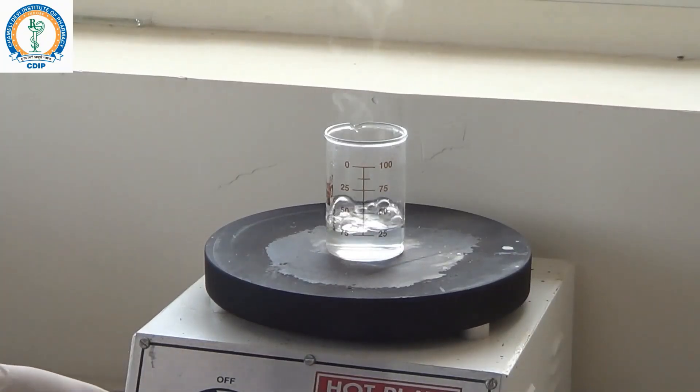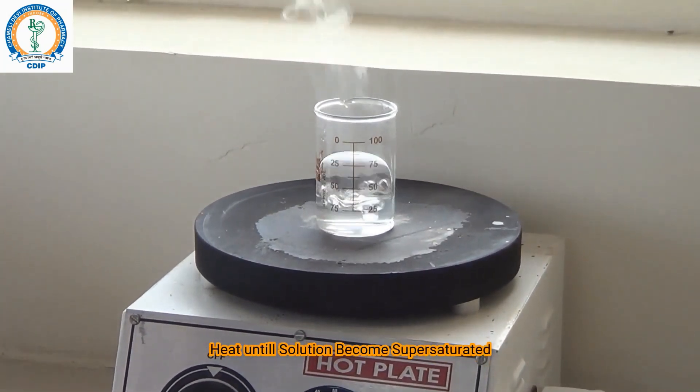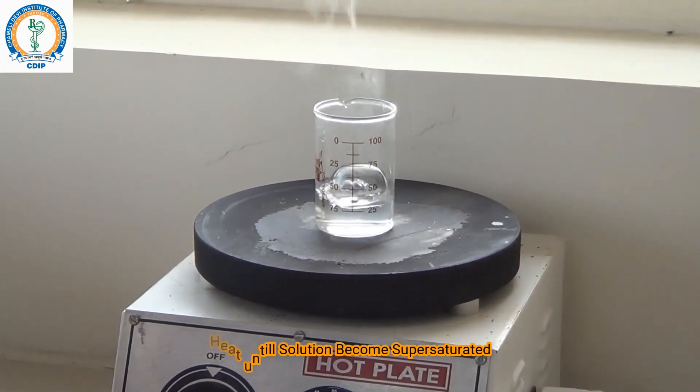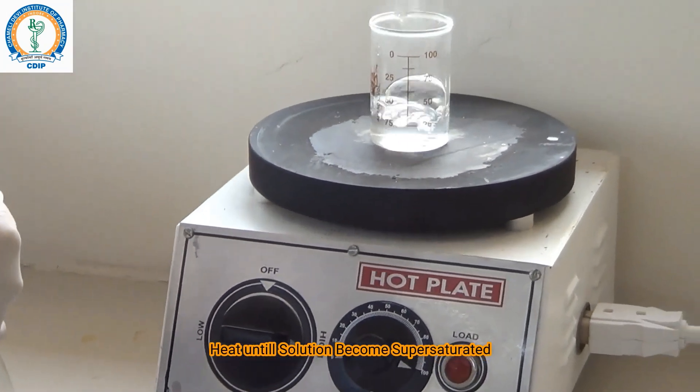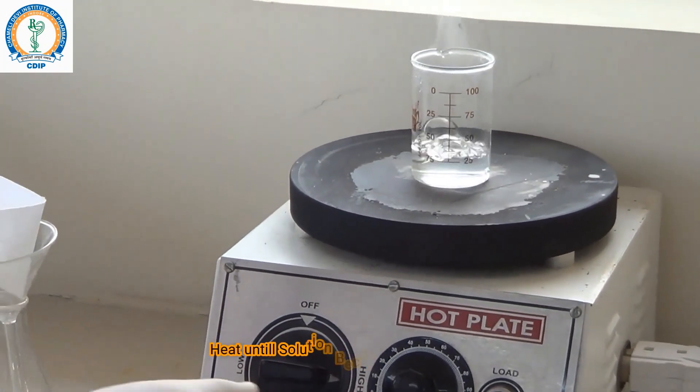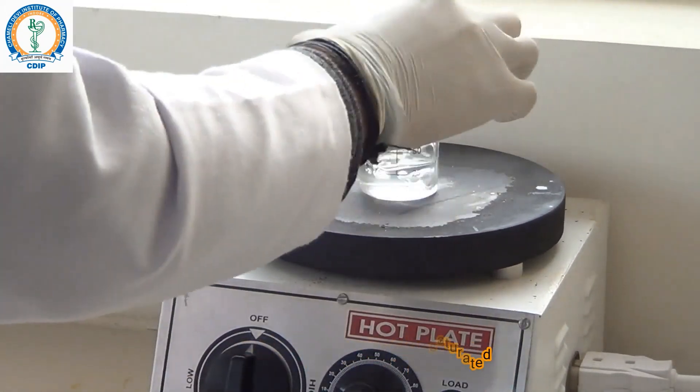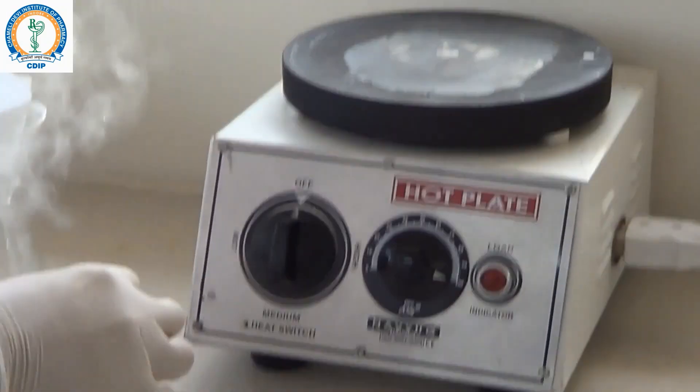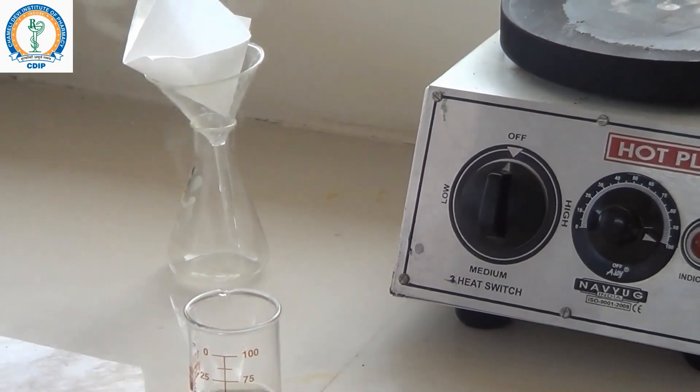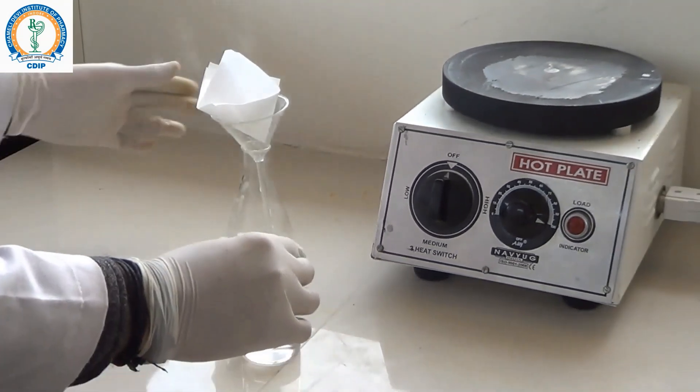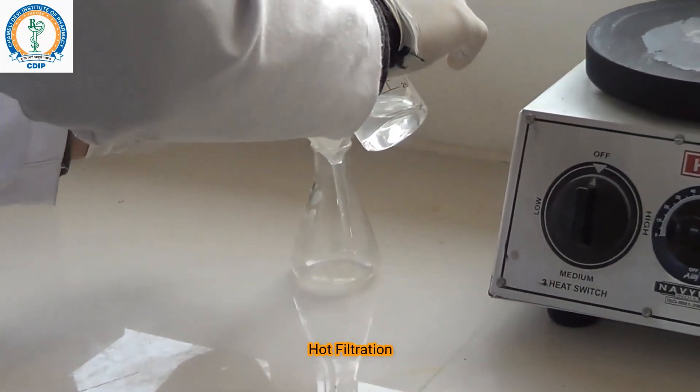After boiling, you can see the solution becomes concentrated and now we will go for hot filtration. The hot filtration removes out the impurities if any are present in the solution. For this, first of all remove the beaker from the hot plate and keep aside for one minute. Now filter the solution using a Whatman filter paper.